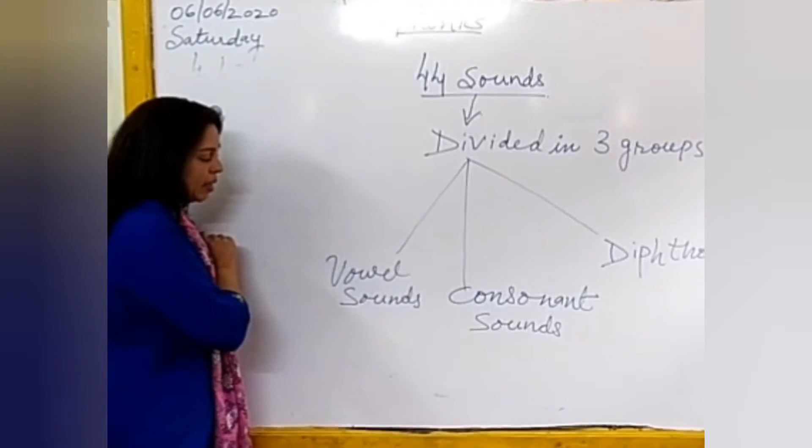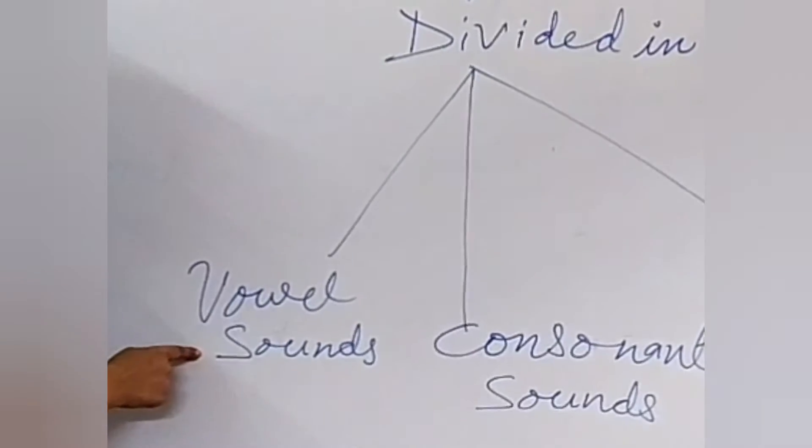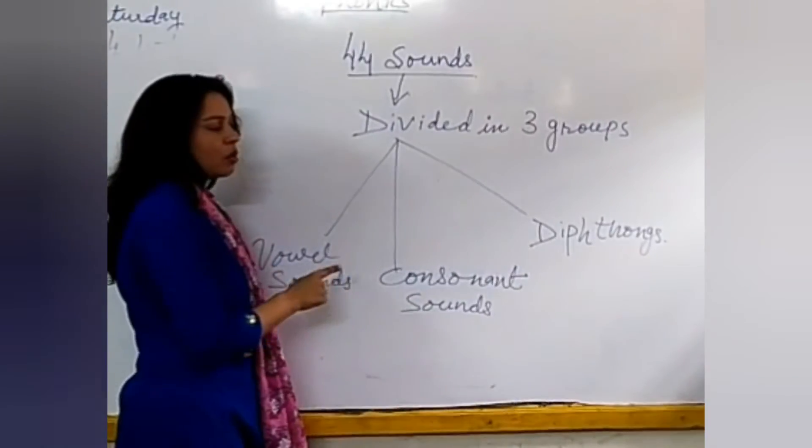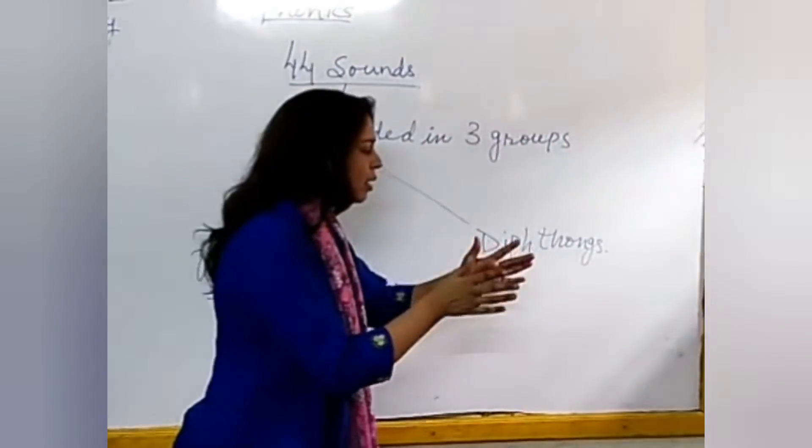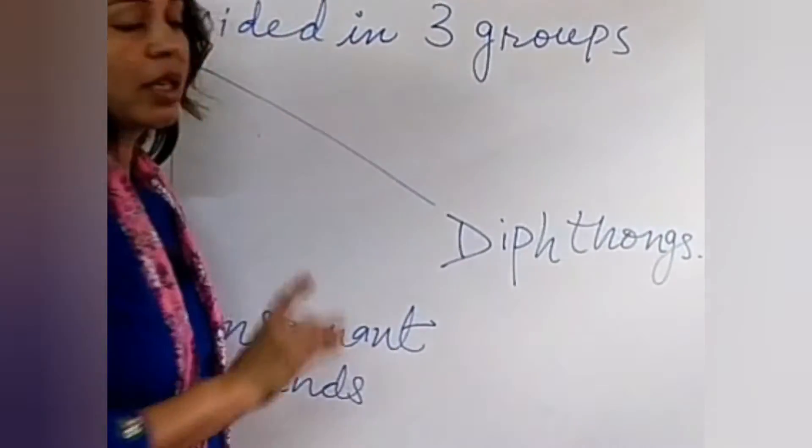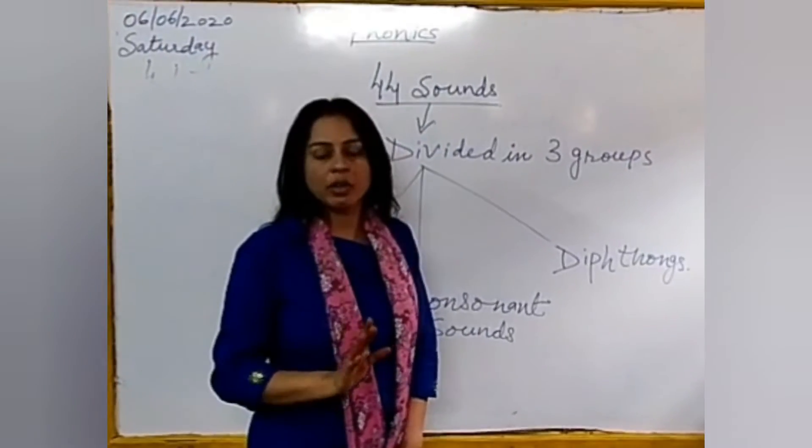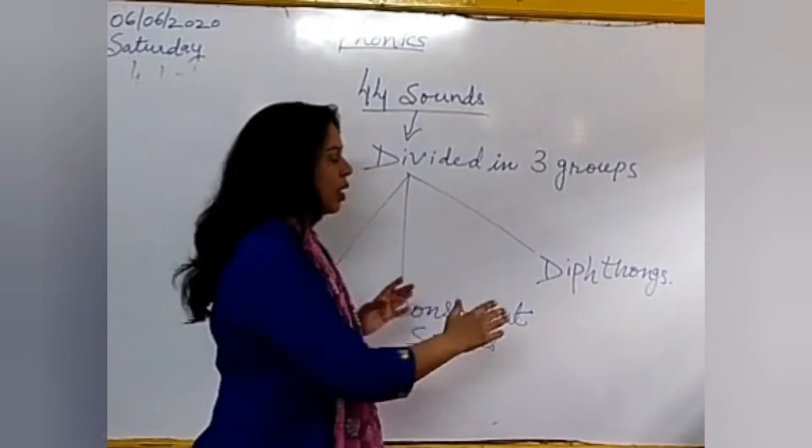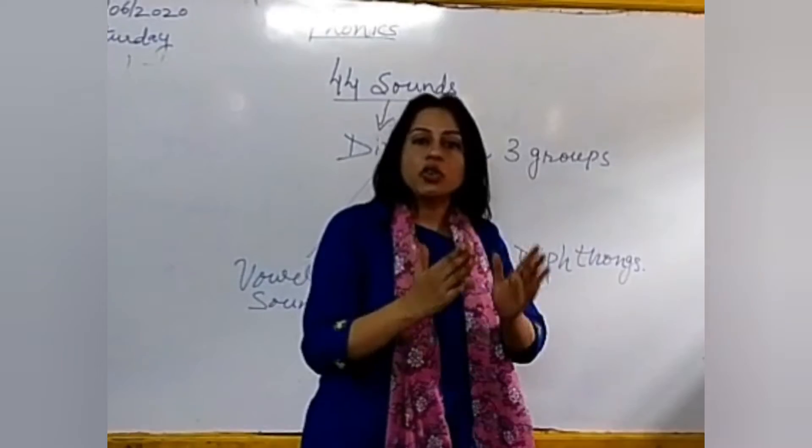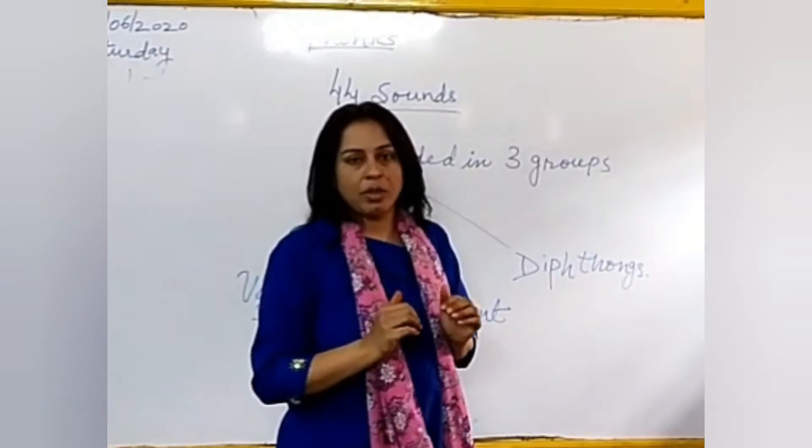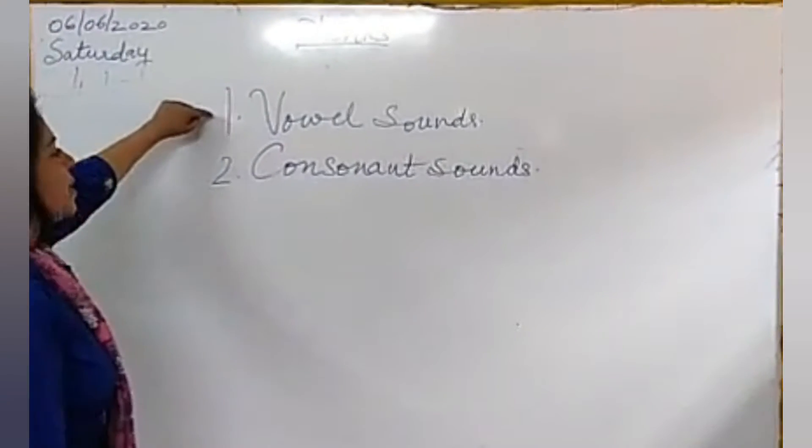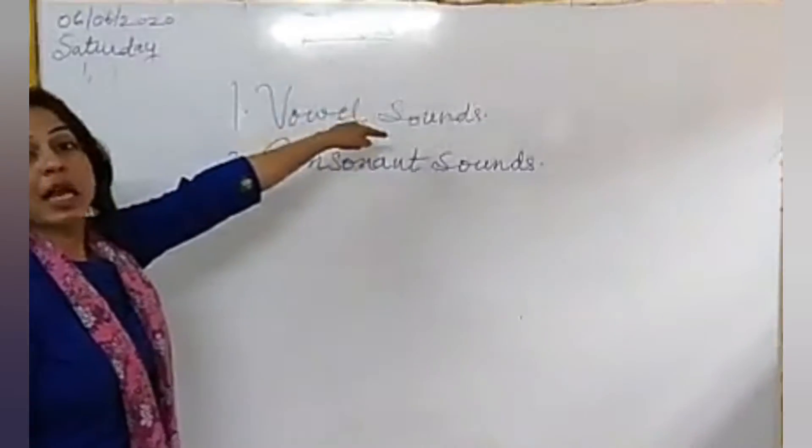Three groups. First one is vowel sounds. Second one is consonant sounds. And third one is diphthongs. Diphthongs, that is new for you. And these two, you just now have learned. First one is vowel sounds.